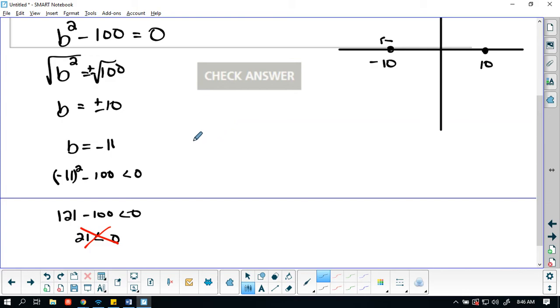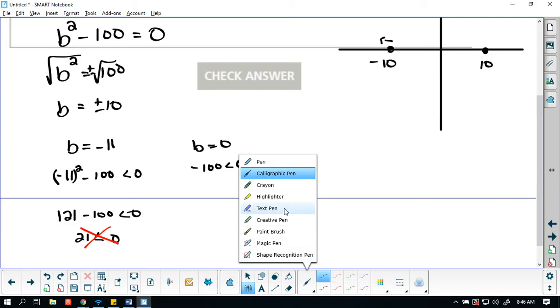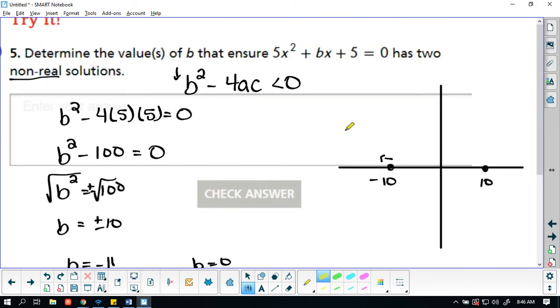We're just looking for our bounds here. Let's do when b is equal to zero. We have negative 100. Is that less than zero? Yes, that is. So in this region here, we are positive. Then in this region here between these two, because again, this is the only place that we could actually go from positive to negative, we are negative.